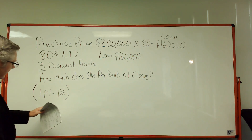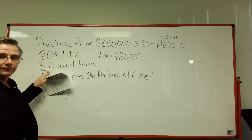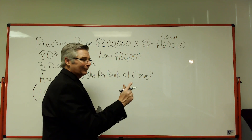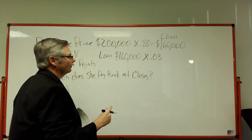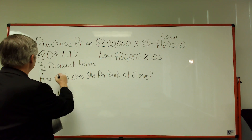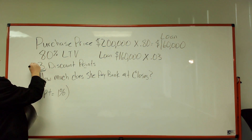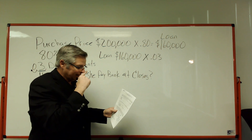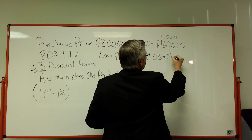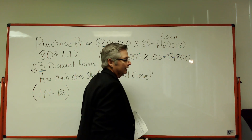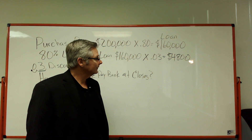If one point is one percent, three points equals three percent. So we take $160,000 and multiply it times 0.03 — that's how you write three percent; you move the decimal point two spots to get 0.03. $160,000 times 0.03 comes out to $4,800. That's what she will pay at closing for those points.